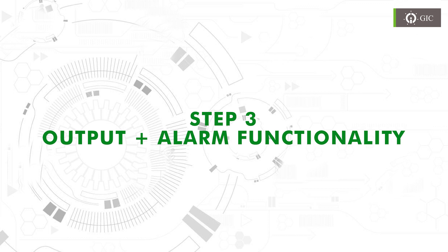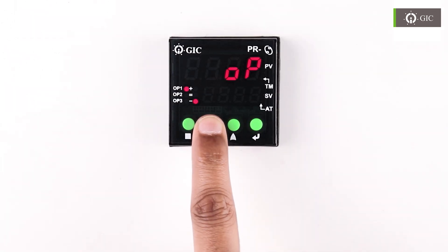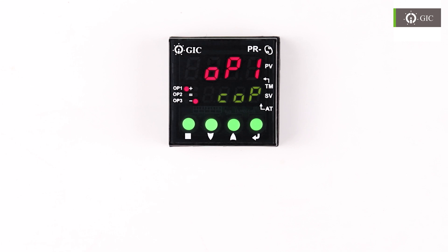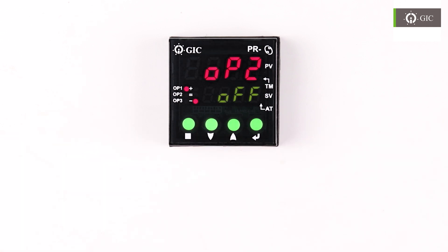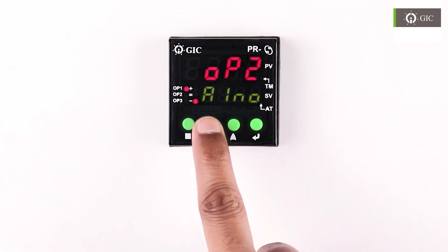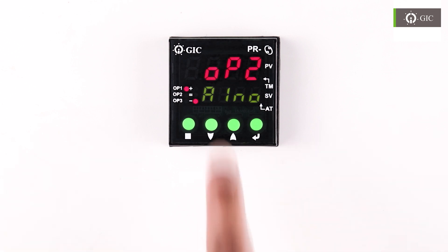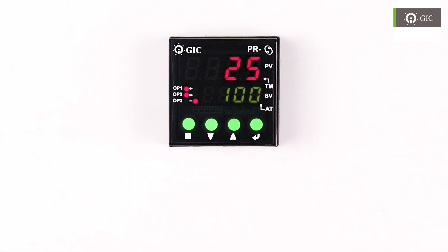For output and alarm setting, using the scroll down key, go to OP then press enter. OP1 is COP — that is controller output by factory default. Retain this setting for controlling purpose and proceed to OP2 and OP3. You can also use alarm functionality for outputs. For OP2, A1NO means output 2 will be on when alarm condition is true, and A1NC means output 2 will be off when alarm condition is true. Press enter to store the selection. Press exit key twice to exit the OP menu.